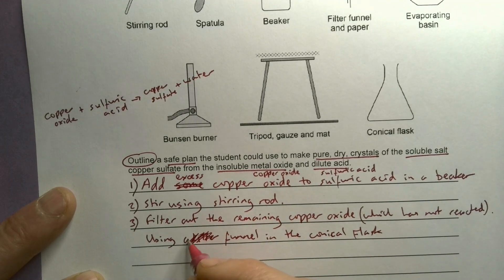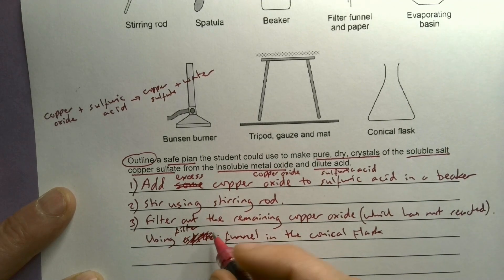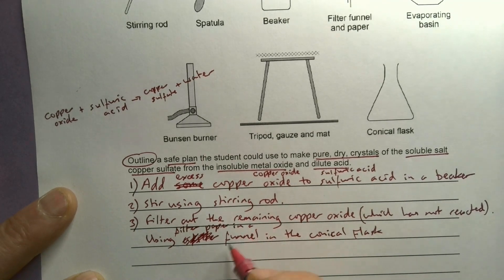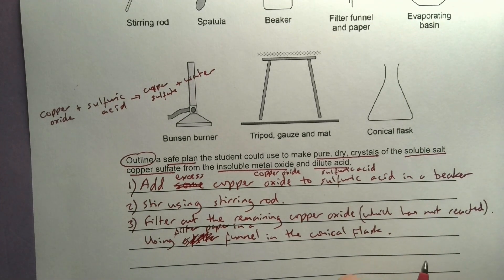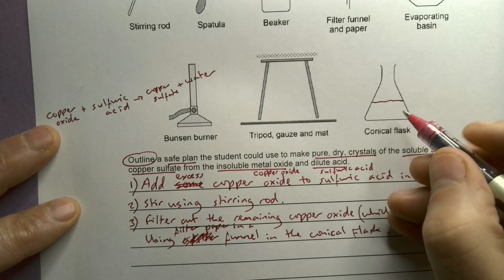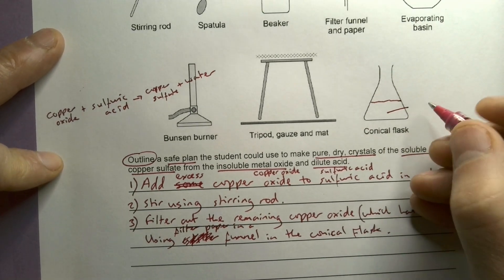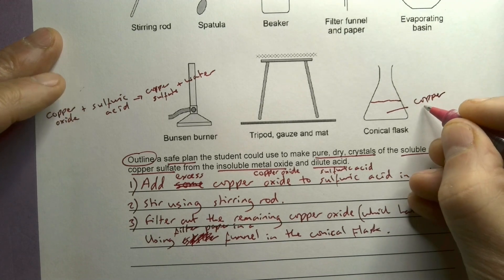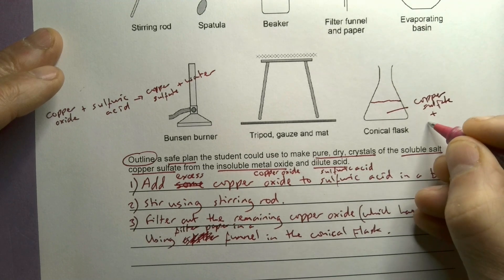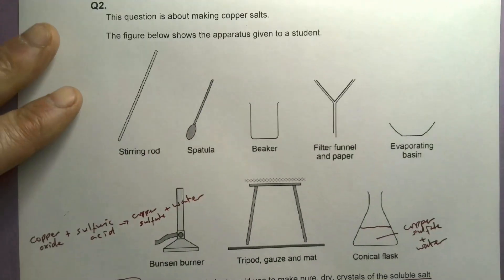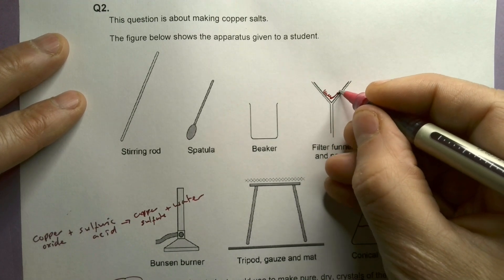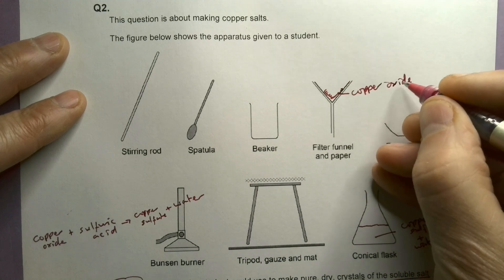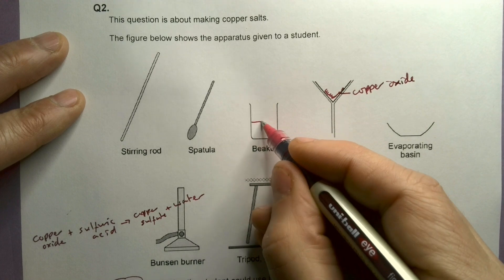And I might say they're using, actually using filter paper in a funnel in the conical flask. Okay, so then I'm going to end up with copper sulphate and water. So copper sulphate plus water. So the reaction will have happened, I will have caught some copper oxide there. There'll be no acid left at all.